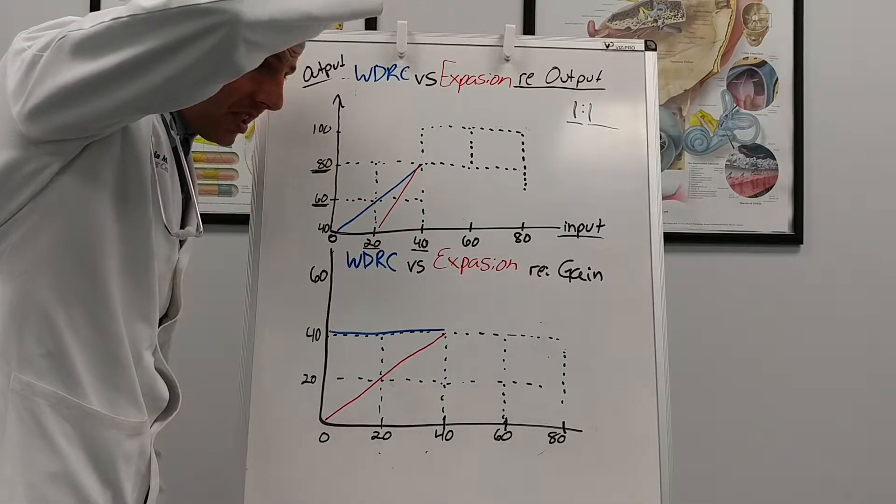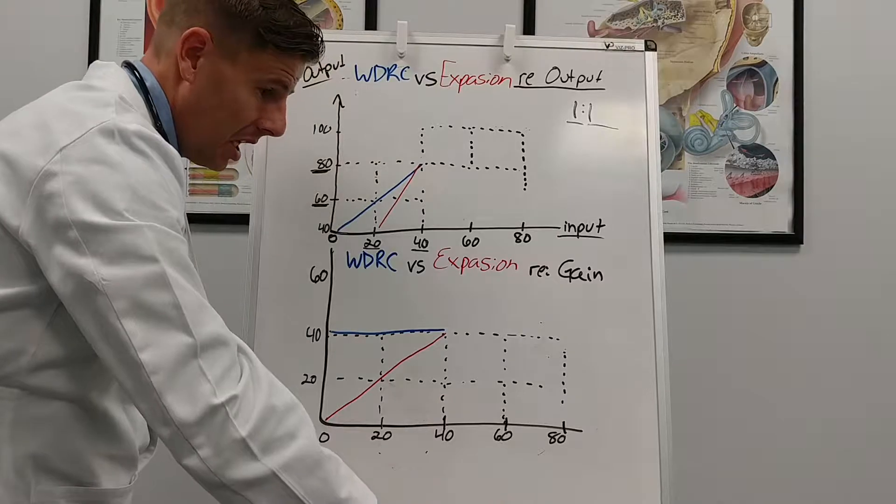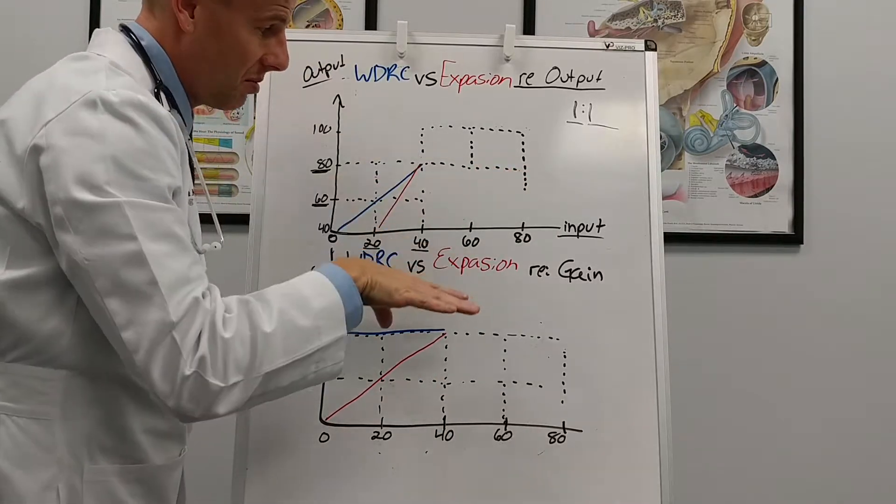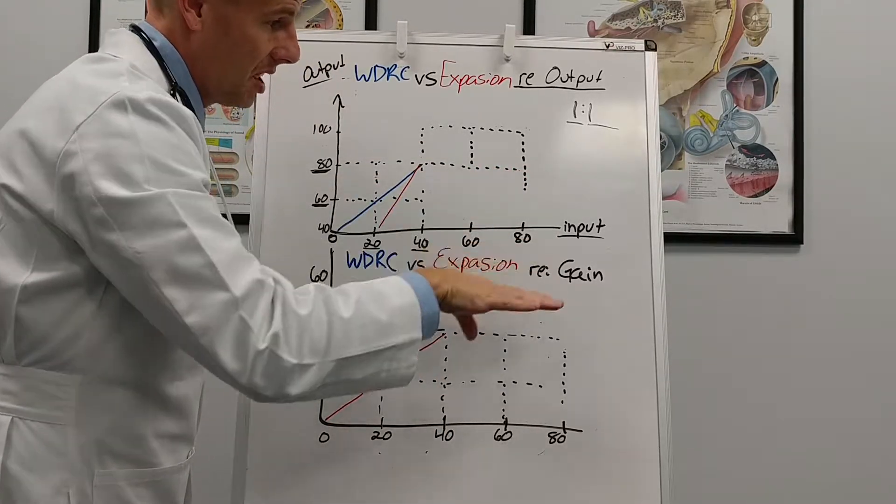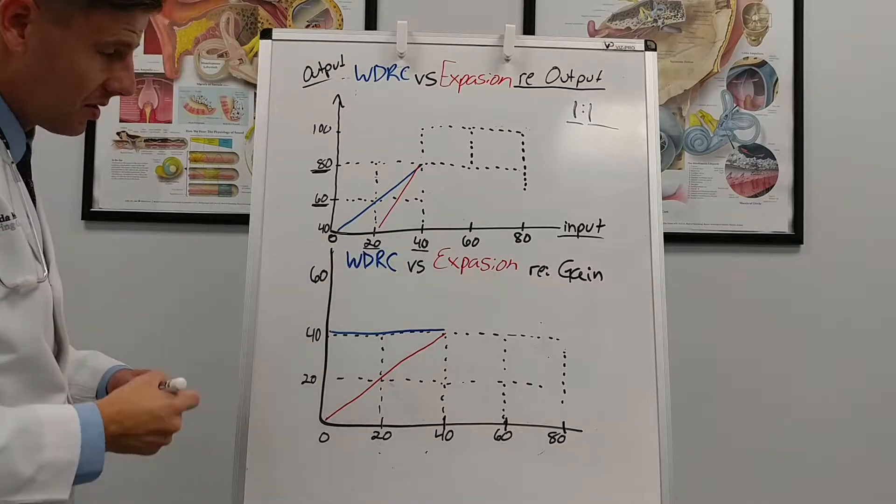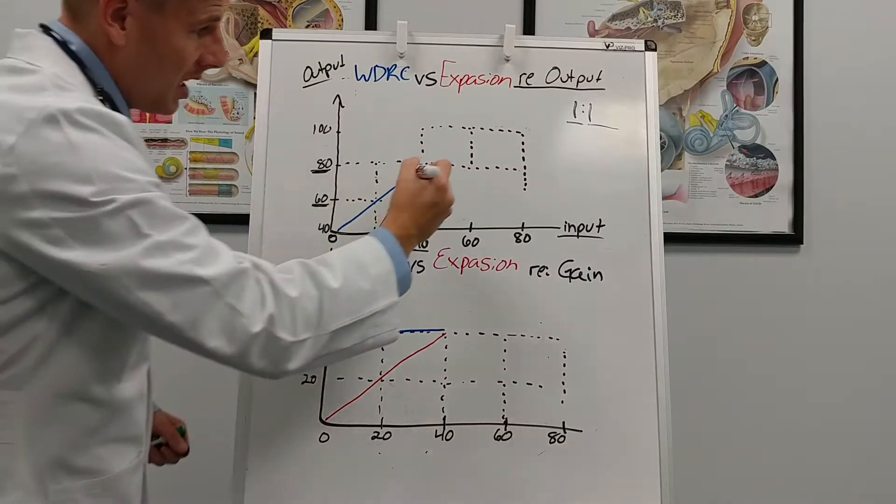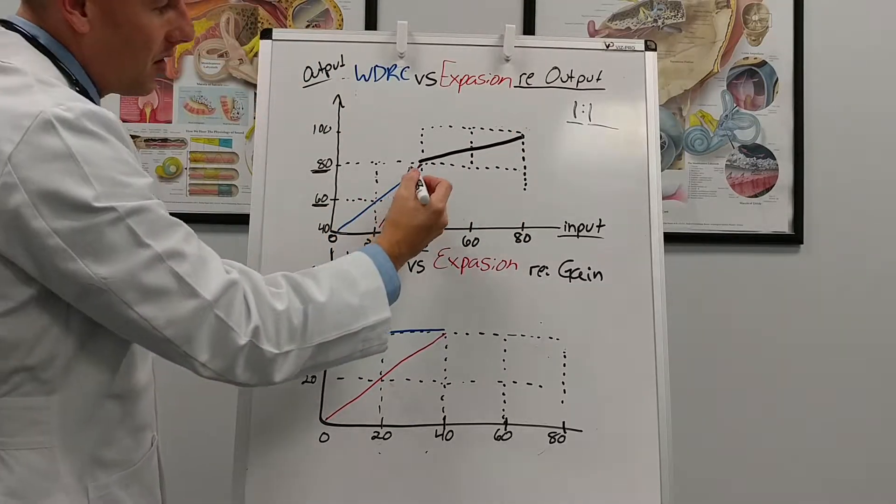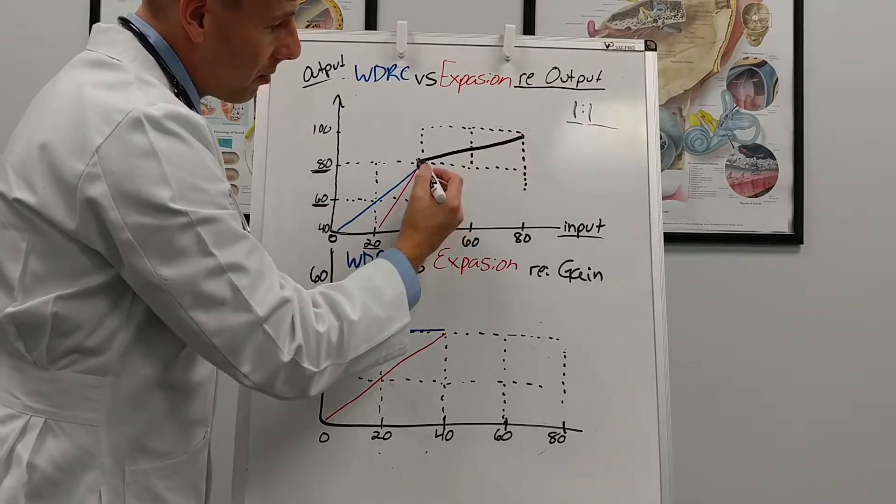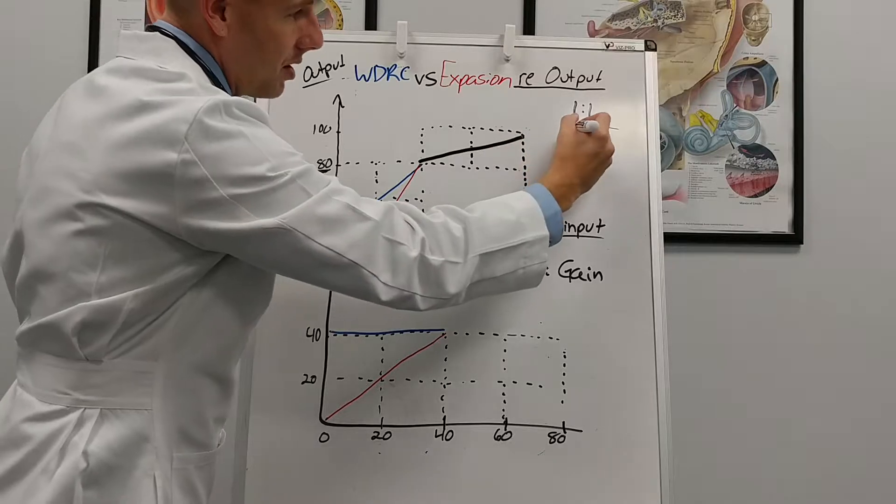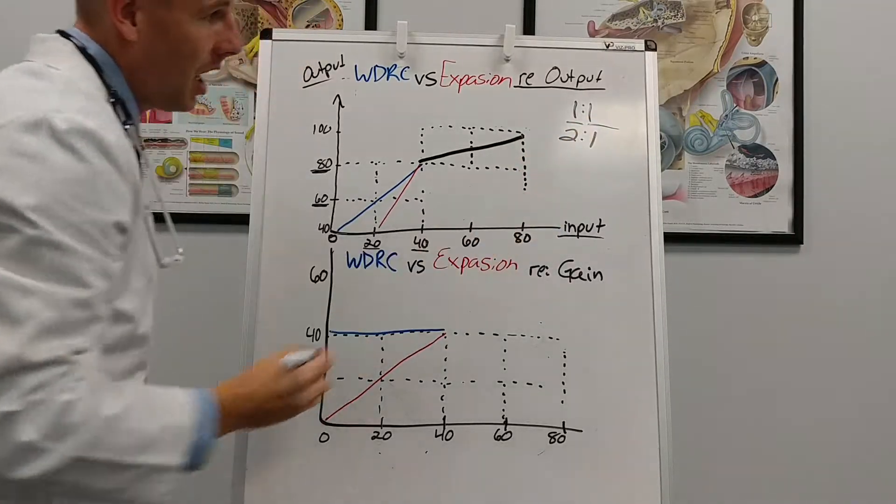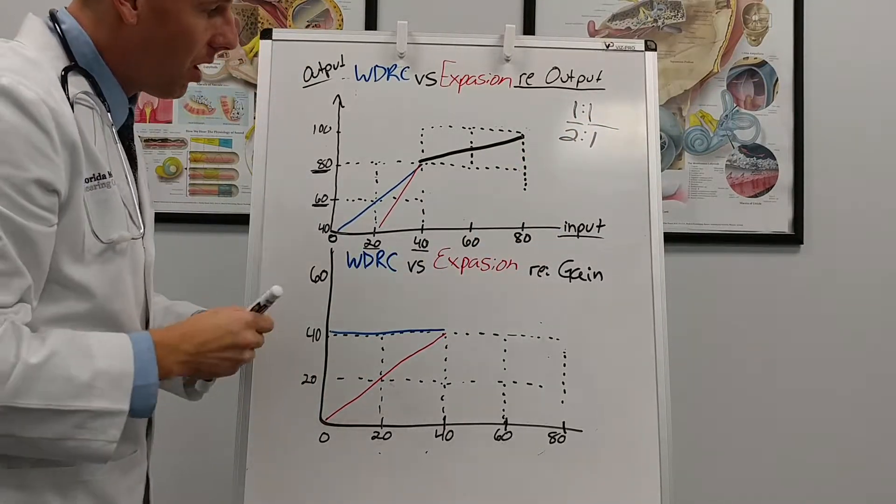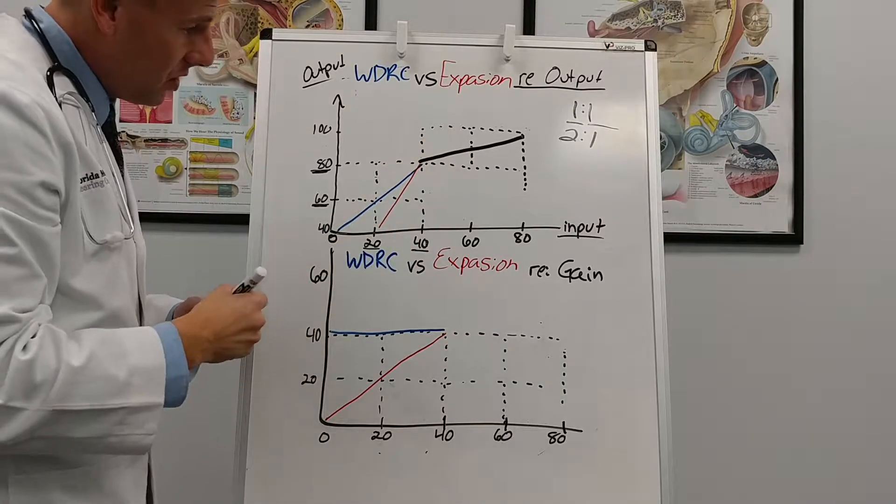Compression is going to be taking down loud sounds increasing soft sounds which helps with speech intelligibility and protects the patient from extreme loud sounds. So now instead of going up one over one I'm going over two up one. So I've just had a compression ratio of two to one and where this has changed is called my knee point.